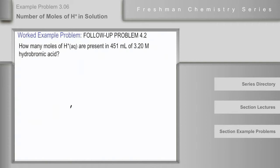In this problem, we use the definition of molarity and the idea of the acidic dissociation of hydrobromic acid to determine how many moles of hydrogen ion are formed in 451 milliliters of a solution which is 3.20 moles per liter of hydrobromic acid.